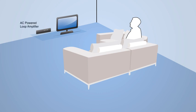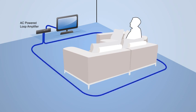An AC powered loop amplifier plugged into the output jacks on the back of the television or stereo system. A loop of wire connected to the loop amplifier encircles the room, usually on the floor.